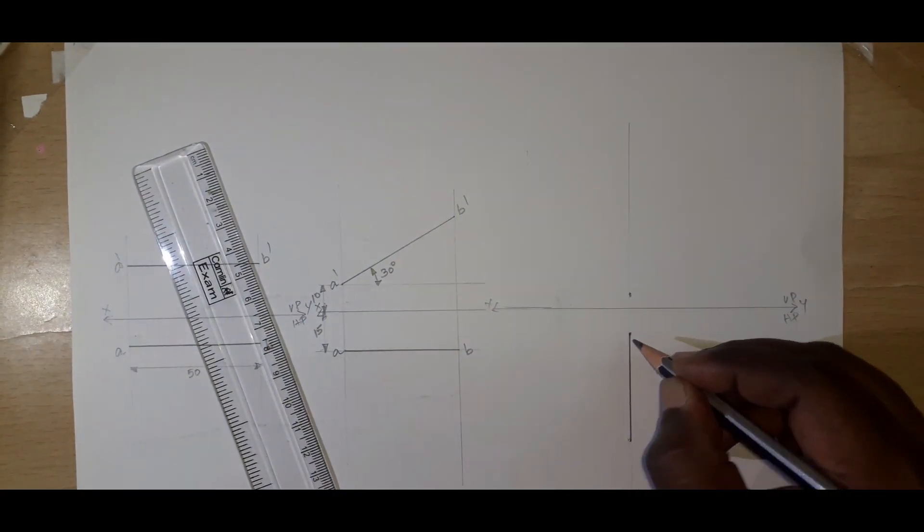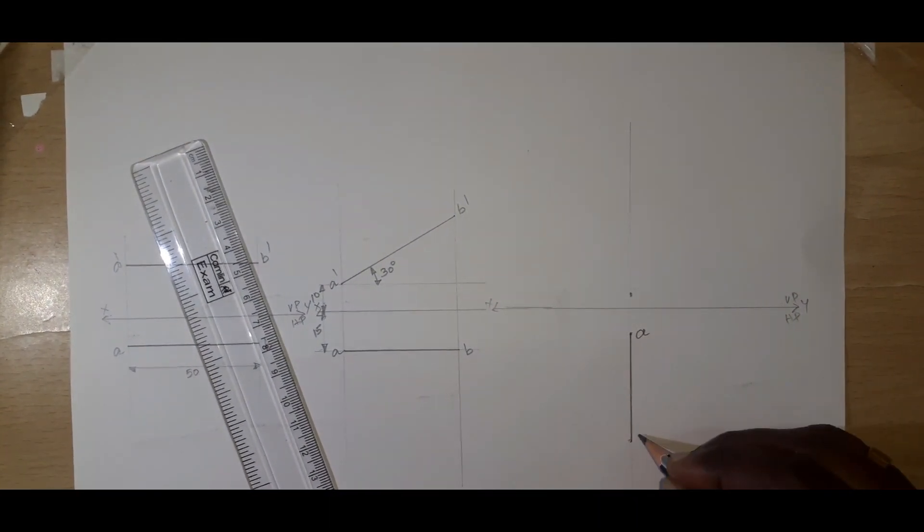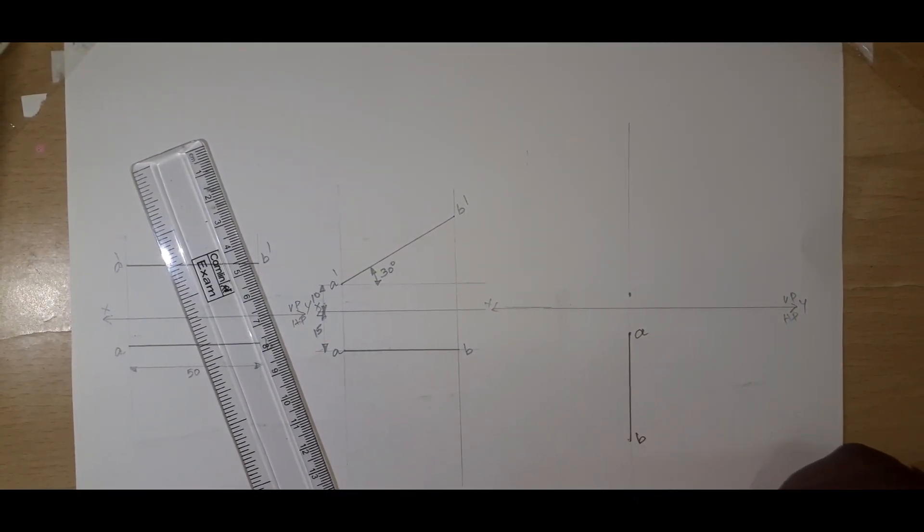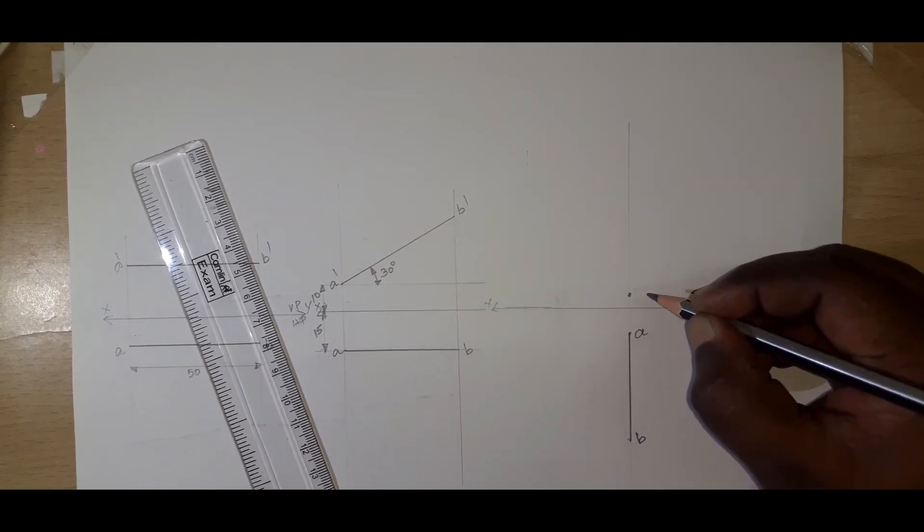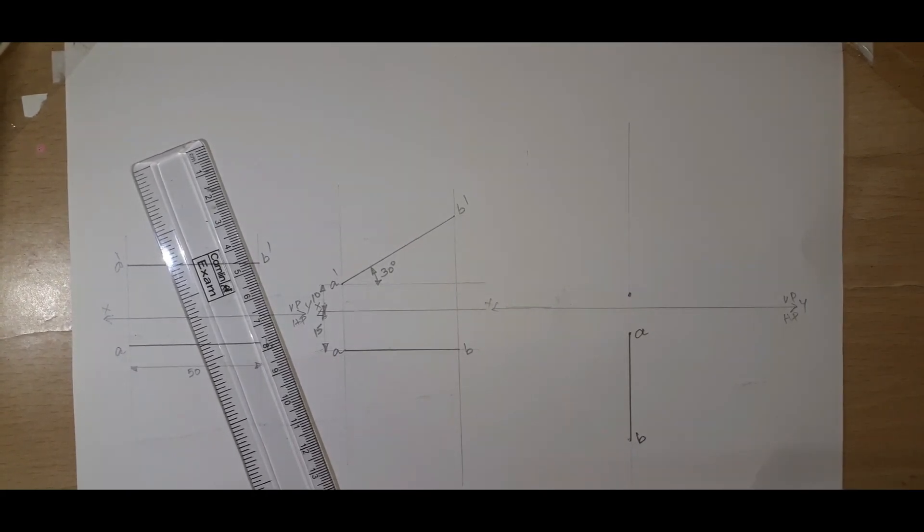In this case, the line is: this is A and this is B, starting points and this is the point. Here, how we are going to name it, that is very important.